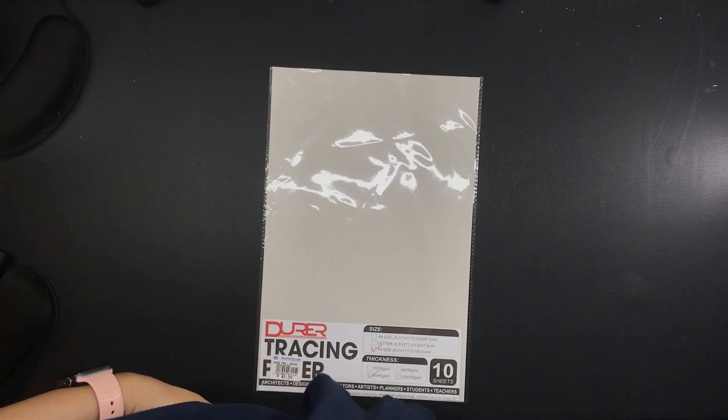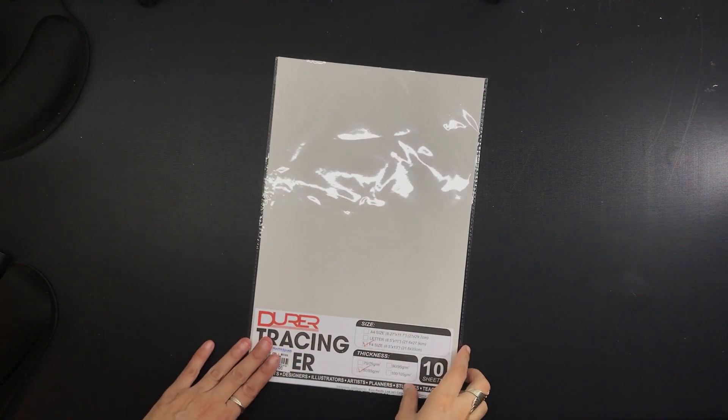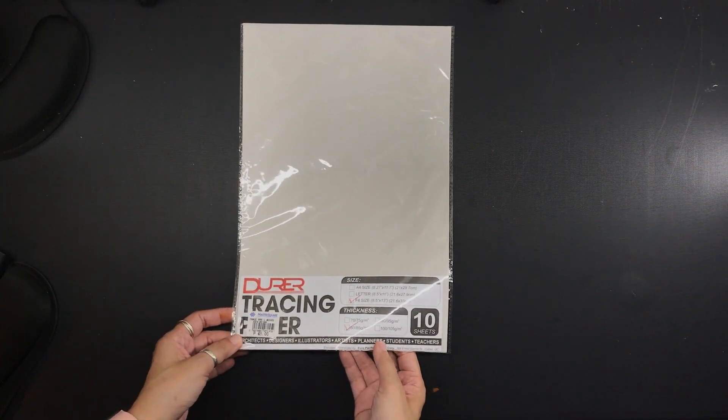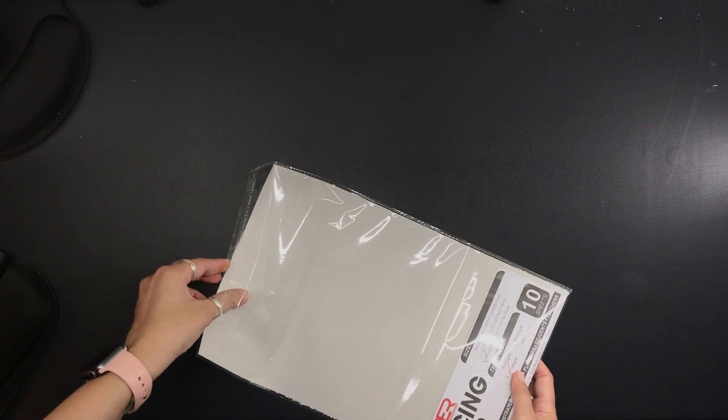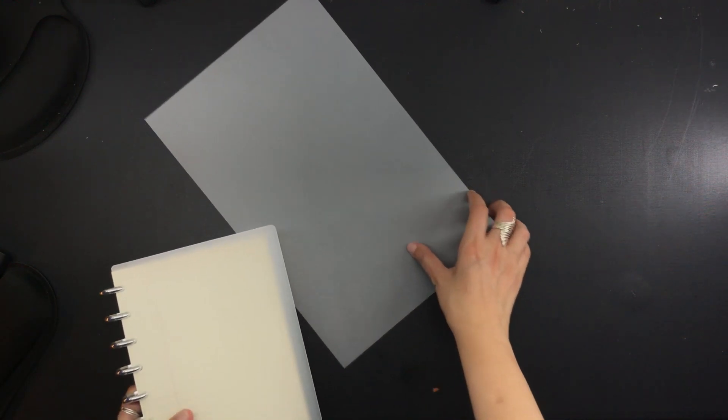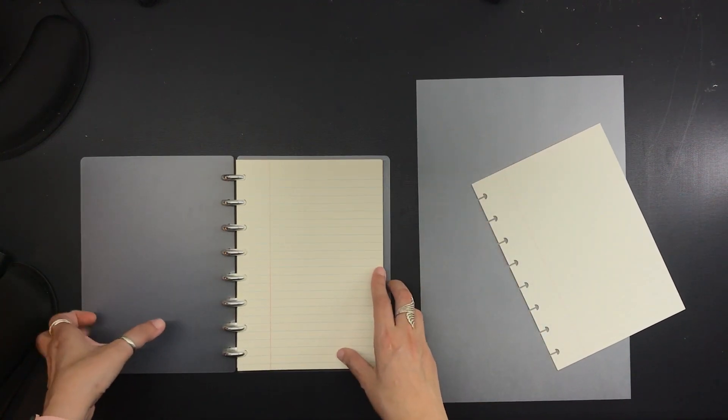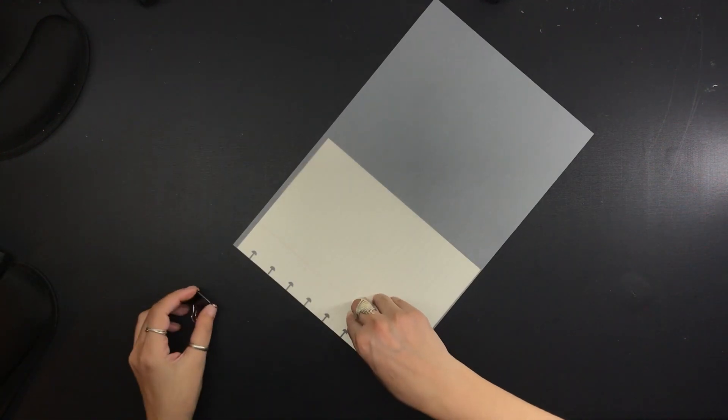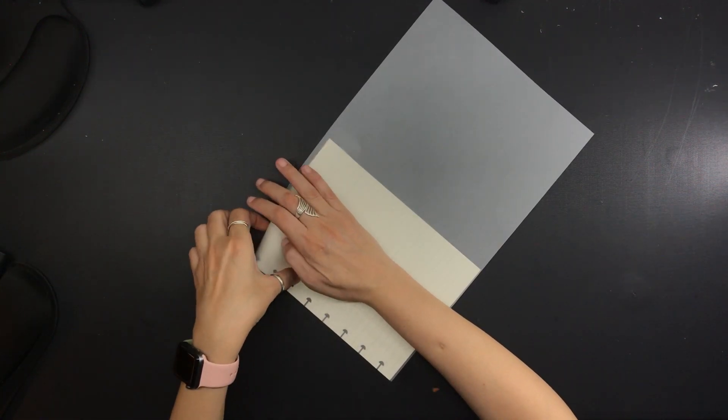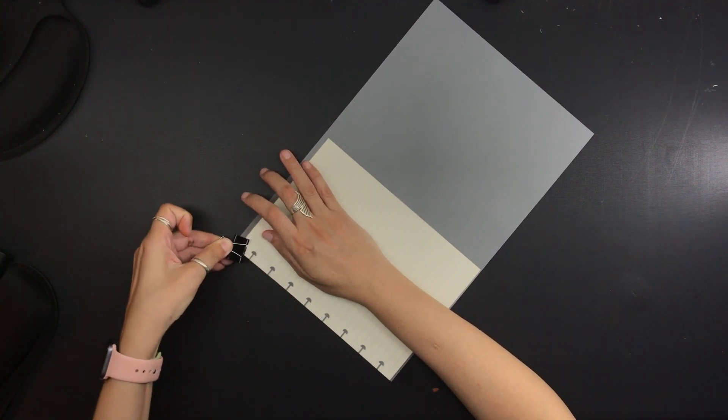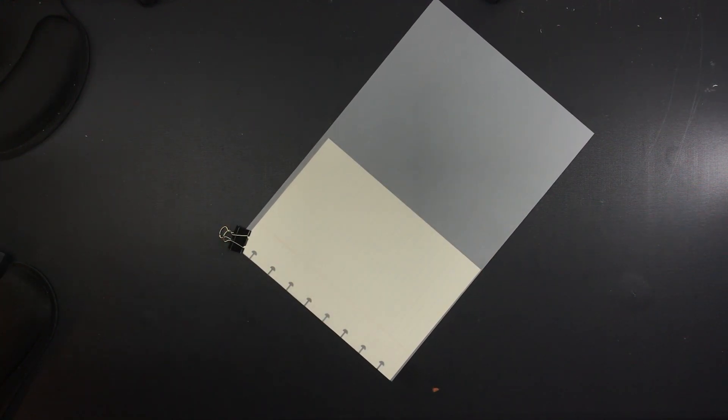Now to make the inner covers for the notebook, I will be using tracing paper again. This is the Durer brand, 82-85 GSM. Because I will be laminating this later, it doesn't matter if it's not that thick. I purchased this Durer tracing paper in a local store in my city called Master Square. For a change, instead of printing artwork on the tracing paper like I used to do, I am going to write something on it using my own handwriting. As a writing guide, I am going to use the sheet of notepaper that I took from the notebook.